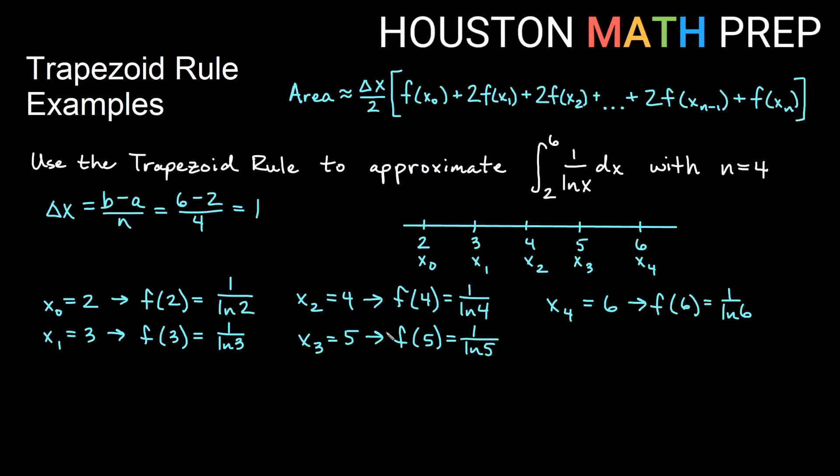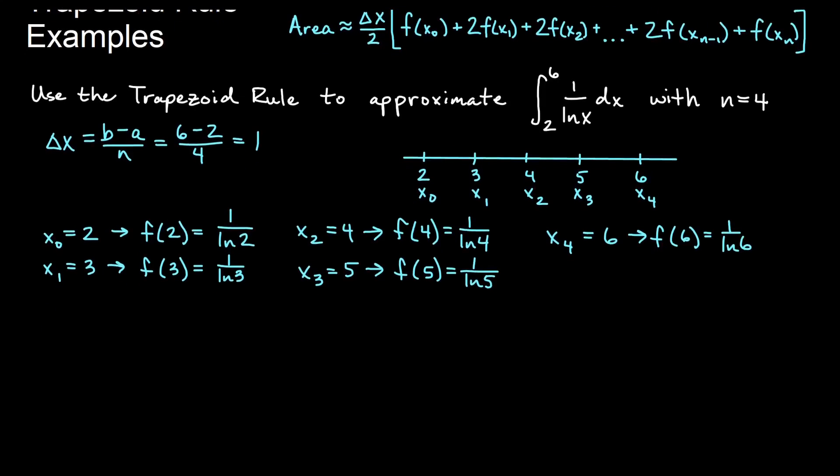These numbers are not the nicest to work with by hand. We could either just leave these or get decimal approximations if we want to. Let's go ahead and write the version of the formula that we're going to use with n equals 4 here.